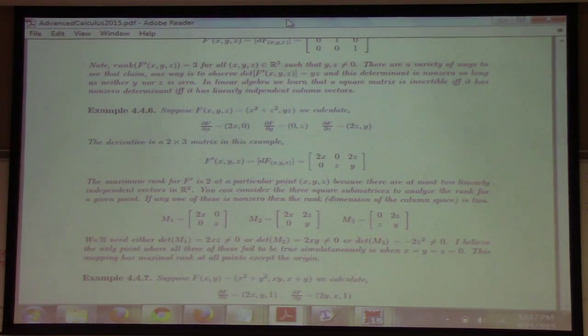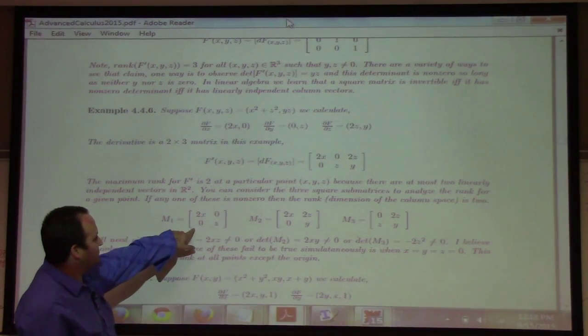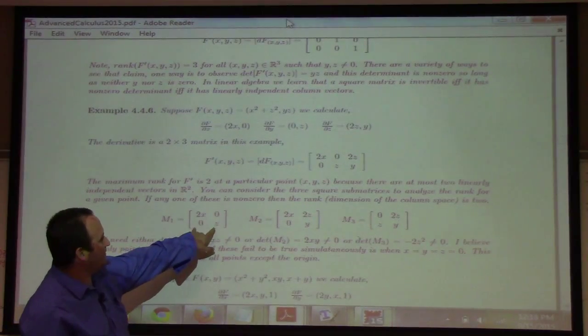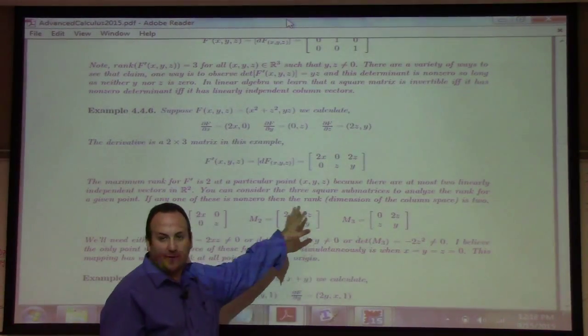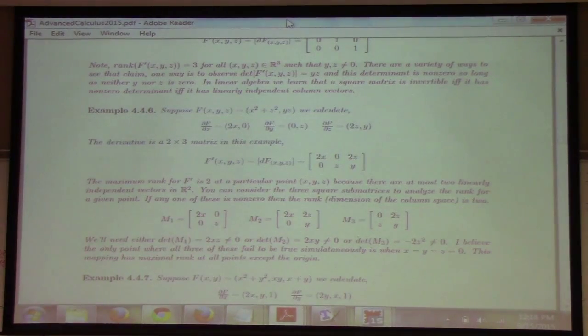But I can tell you, having graded many finals of linear algebra, this is just my wish. It's not the reality of linear algebra. Students have a lot of trouble with dimension theory for some reason. Basically, these are the three submatrices you can think about. If the determinant of any one of these is non-zero, that suffices to give you rank two.